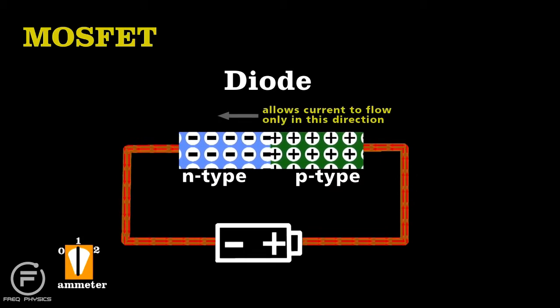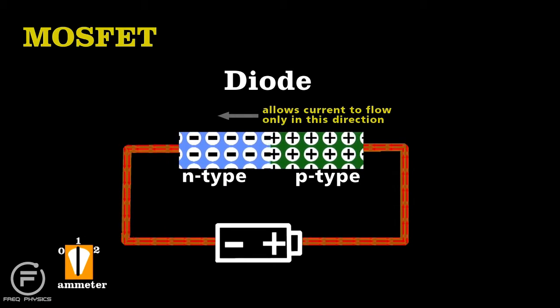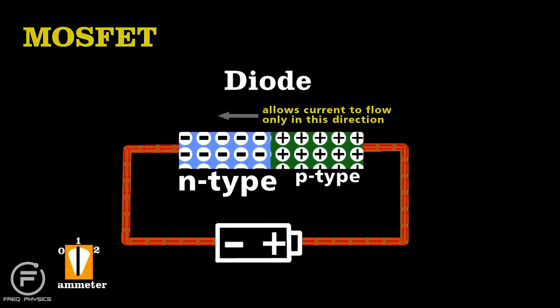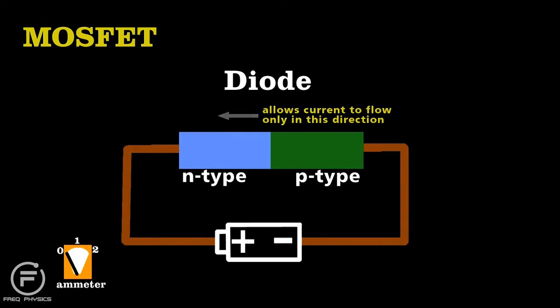Recall that a diode allows current to pass in only one direction, because it uses two types of semiconductors. A type that uses negative charge carriers, and one that uses positive charge carriers. Flip that battery, and the flow of charge stops.